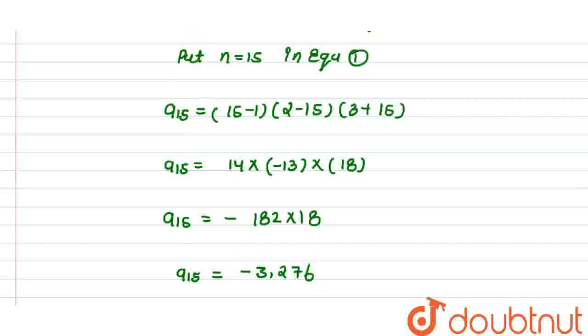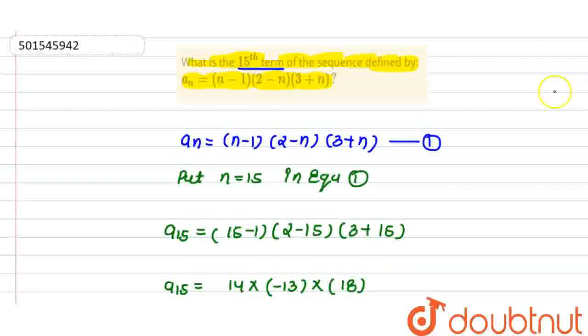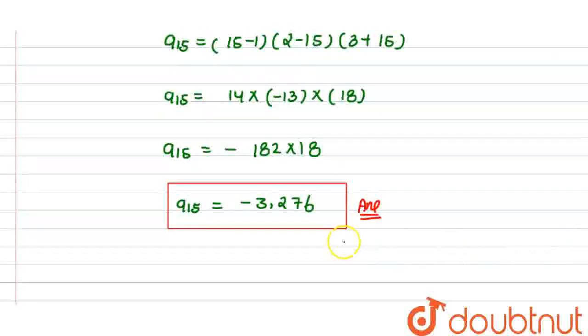So a15 value is equal to minus 3,276 and this will be our answer. We had to calculate this that if the sequence is given to us, then the 15th term will be minus 3,276. Thank you.